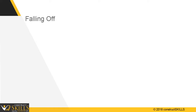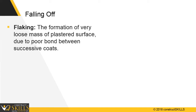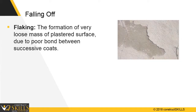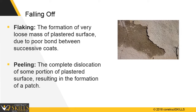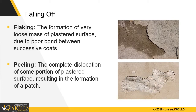Falling, which includes flaking and peeling, is one of the defects in plastering. Poor bonding between succeeding coats will result in formation of very loose mass on the plastered surface, known as flaking. Whereas the complete dislocation of some portion of plastered surface which looks like patches is called peeling.